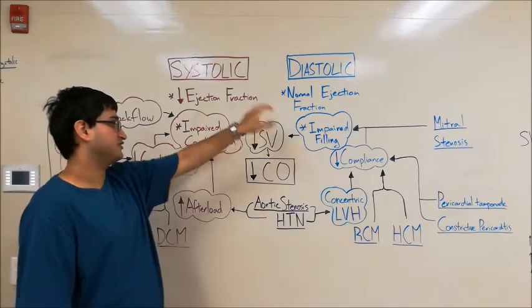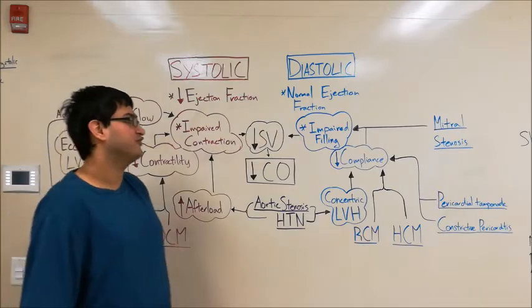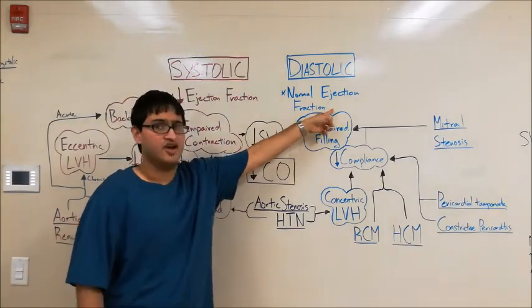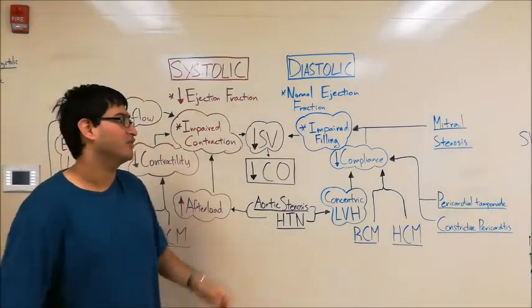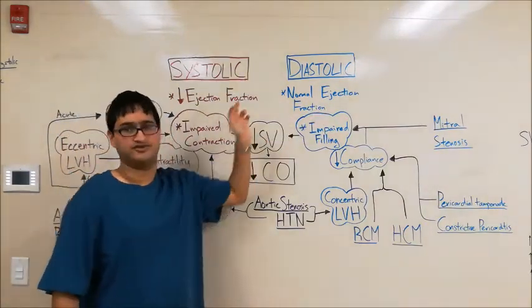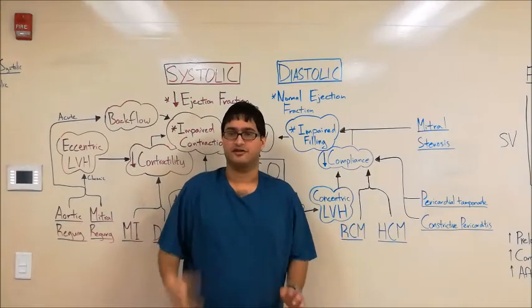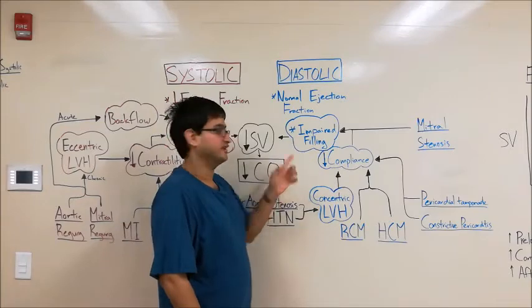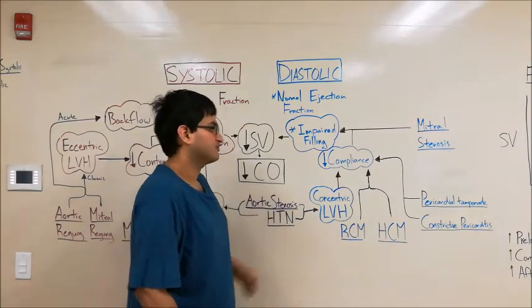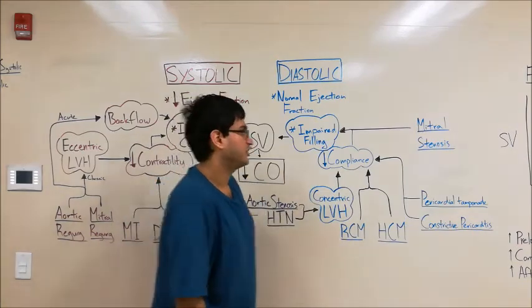The terms diastolic and systolic heart failure are sometimes considered outdated. Newer sources often use heart failure with preserved ejection fraction versus heart failure with decreased ejection fraction, which are roughly synonymous with diastolic and systolic heart failures respectively. Now let's talk about the causes of diastolic heart failure. We said it's all about impaired filling of the ventricle leading to decreased cardiac output, so let's look at some reasons why filling would be impaired.